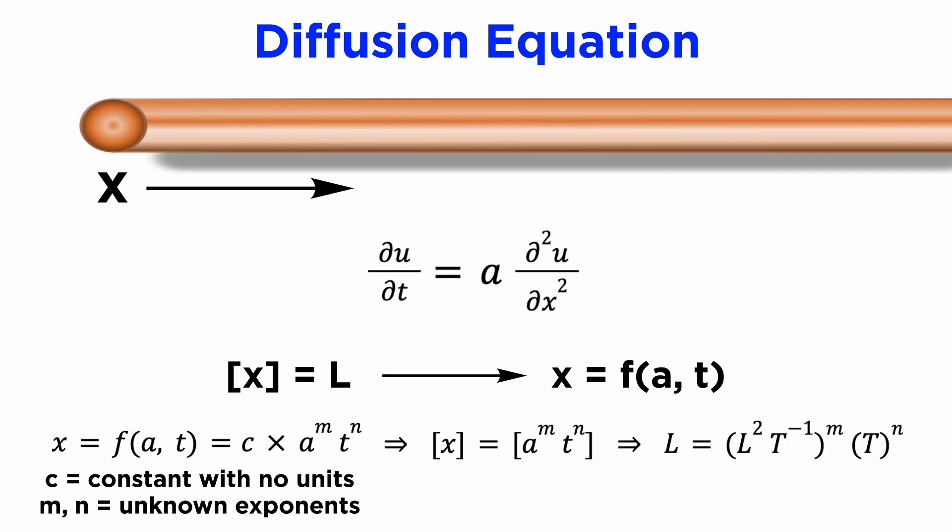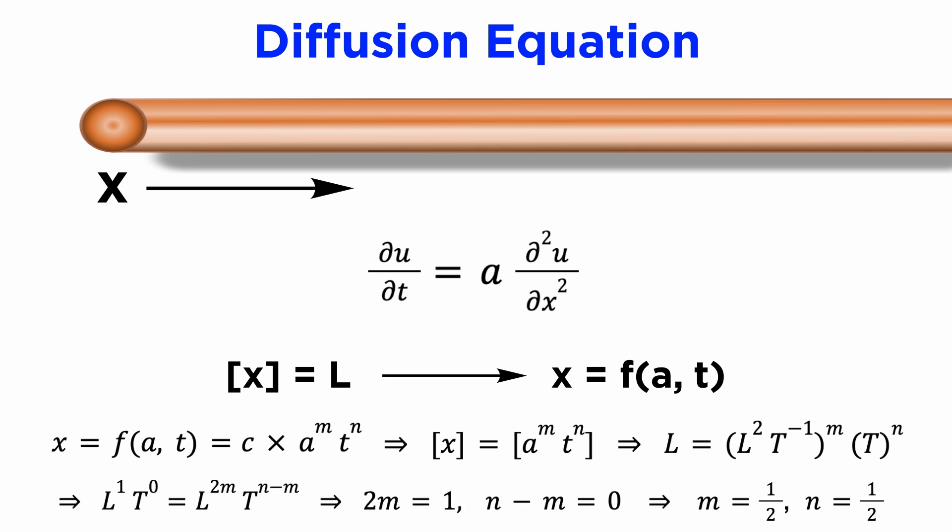Subbing in our known dimensions for A and t, and equating the dimensions of length, capital L, and time, capital T, on both sides, we can solve the system of equations to get m equals 1 half and n equals 1 half.